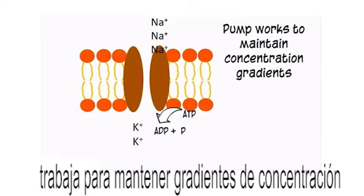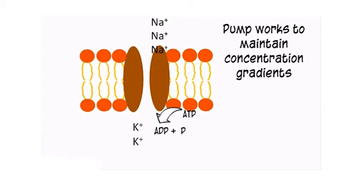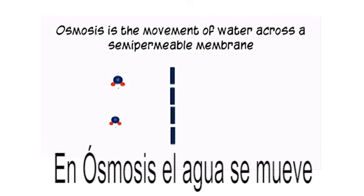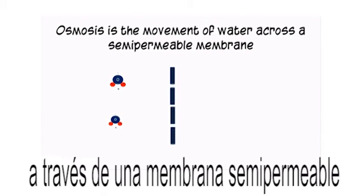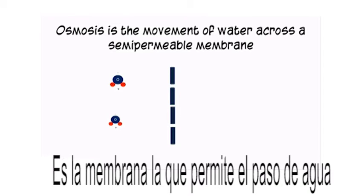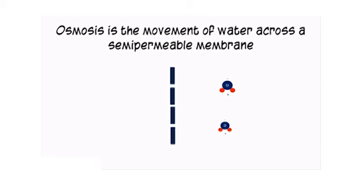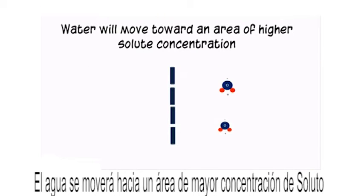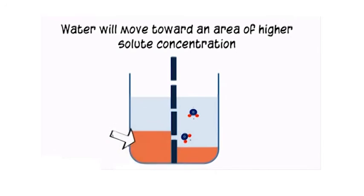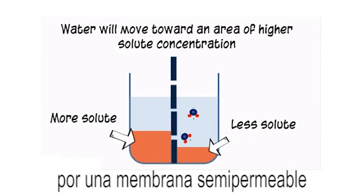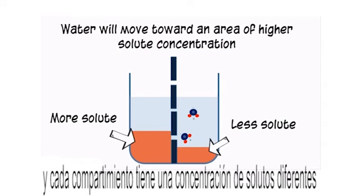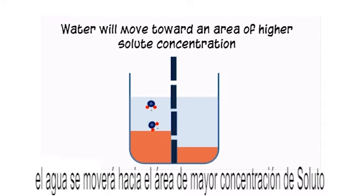In osmosis, water moves through a semi-permeable membrane, which is a membrane that allows water through but not solute. Water will move toward an area of higher solute concentration. If a beaker is separated into two compartments by a semi-permeable membrane and each compartment has a different solute concentration, water will move toward the area of higher solute concentration.